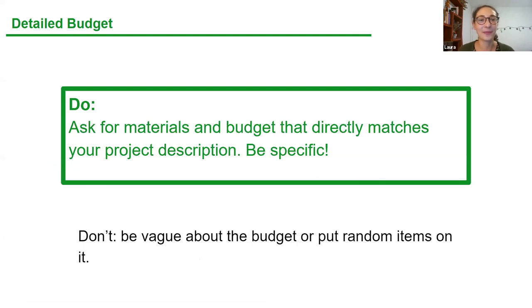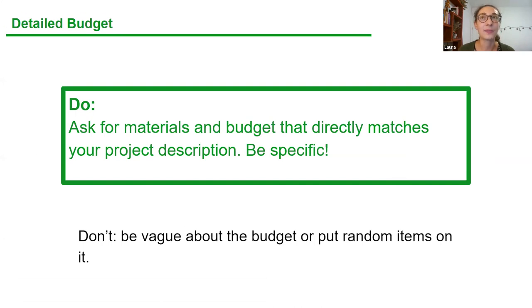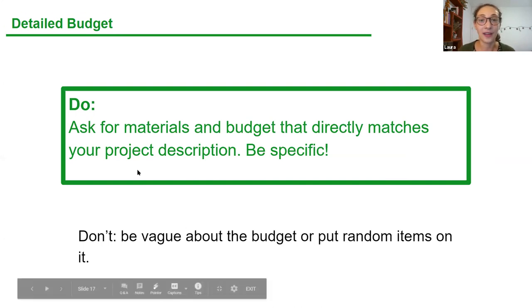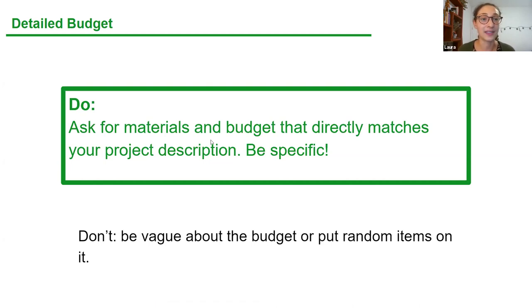Please, please make an extremely detailed budget. You can have all the passion and the most amazing idea that will benefit people, but we've read grants where the project sounds amazing but the budget makes no sense. We can't give thousands of dollars to someone who hasn't clearly illustrated what they're going to do with that money. Your budget needs to be itemized — always use a spreadsheet or a table — and it needs to make sense.